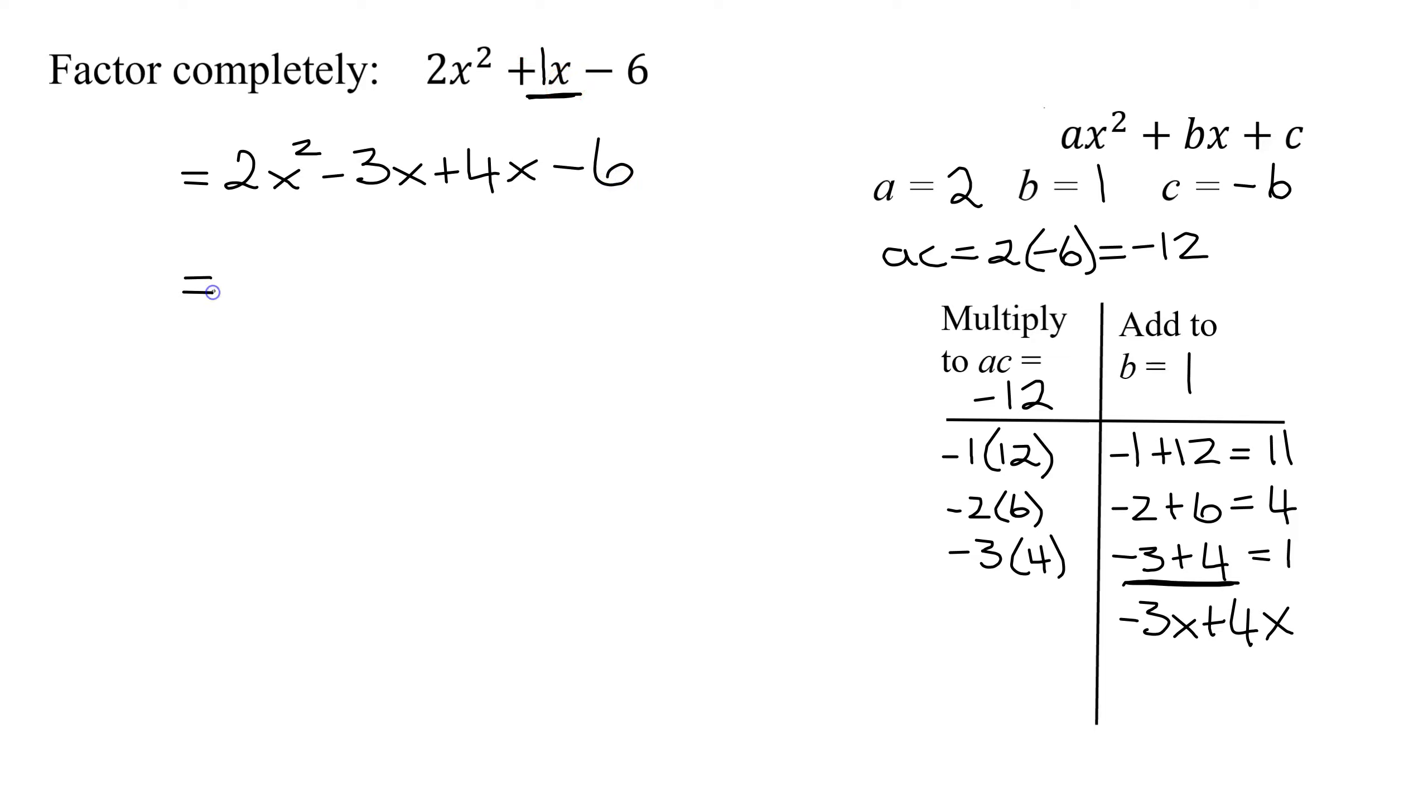And the reason we do that is now I have four terms so I can factor by grouping. What do the first two have in common? I think the only thing they have in common is an x. And I factor an x out of 2x squared, it's going to leave 2x. Factor an x out of negative 3x, it's going to leave negative 3.